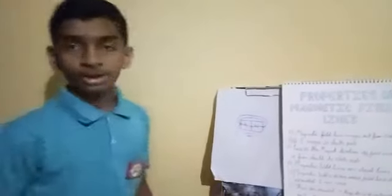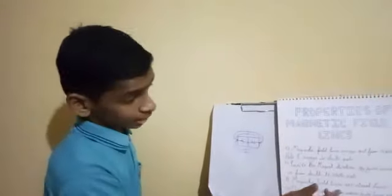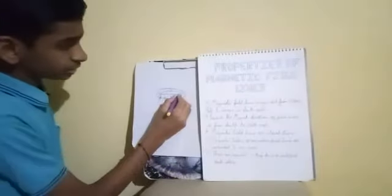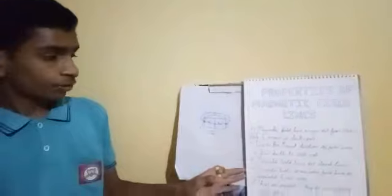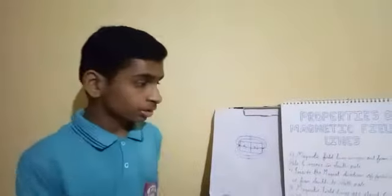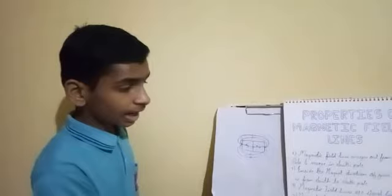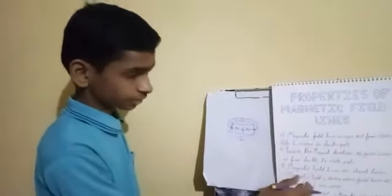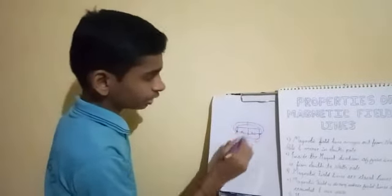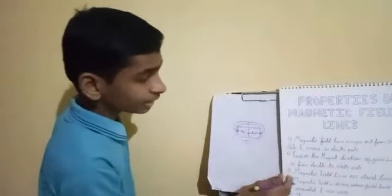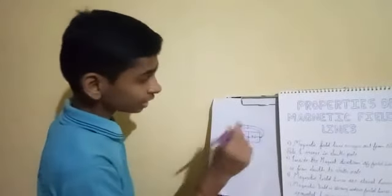Third point, magnetic field lines are closed, means this is becoming closed. Fourth point, magnetic field is strong where field lines are crowded and vice versa. Vice versa means opposite. Magnetic field lines are strong in the crowded place.